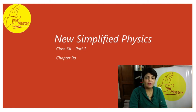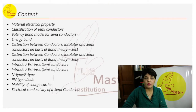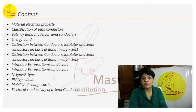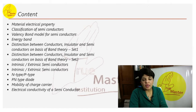Hello friends, we will be covering the following: electrical properties, classification of semiconductors, valency bond model of semiconductors, energy band, distinction between conductor, insulators, and semiconductors on the basis of band theory. Then we'll cover intrinsic and extrinsic semiconductors, n-type and p-type, mobility of charge carriers, and electrical conductivity of a semiconductor.